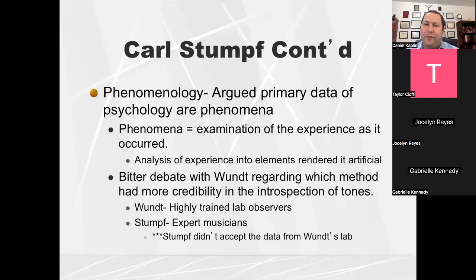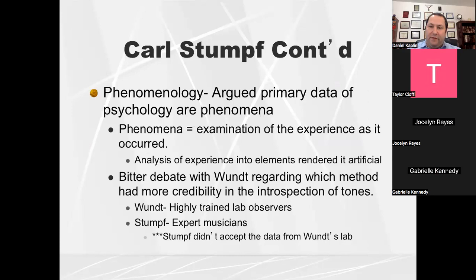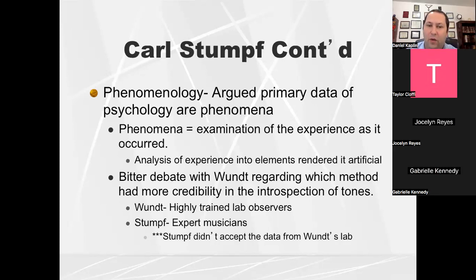Stumpf believed in a principle called phenomenology. Phenomenology is both a philosophical and psychological concept, and what it means is we examine the subjective experience of the individual — but it has to occur as it's occurring. Our observation has to happen in real time. Phenomenologists want to know: tell me what you're experiencing now, versus introspection, which is looking backwards to what you've experienced in the past.